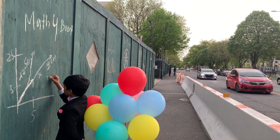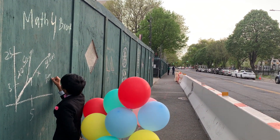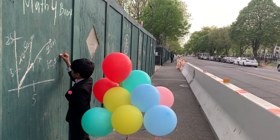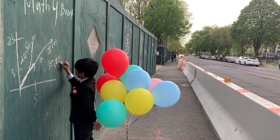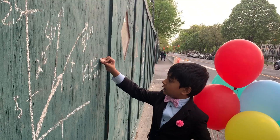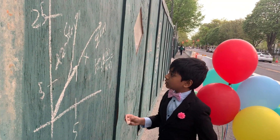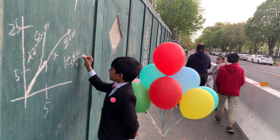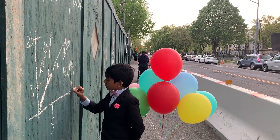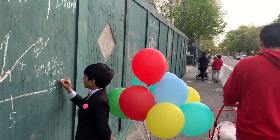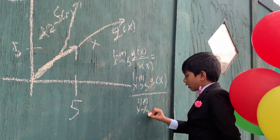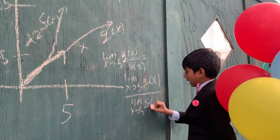So we have a function h(x), and the limit as x approaches 5 of h(x) is equal to g(x) over f(x). So that is what we're trying to find. We can expand this into the limit as x approaches 5 of g(x), divided by the limit as x approaches 5 of f(x).